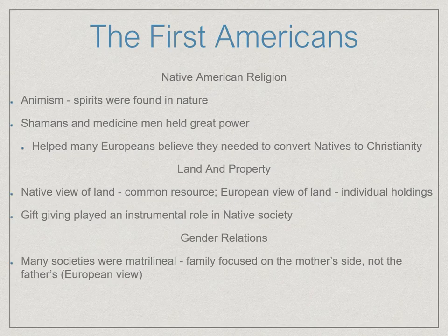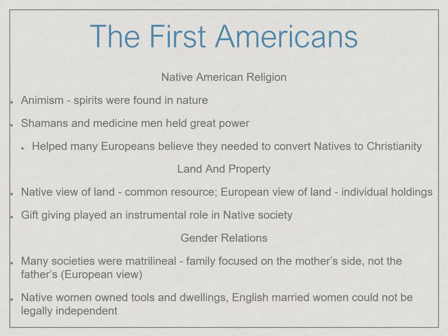We see that some Native groups were matrilineal, where family status and last name follow the mother, not the father — which did not exist at all in Europe. In Native societies, women could own things: their tools, their homes, whatever they needed. But in Europe, like England for example, if you were married, a woman was not an independent person. She was essentially the property of her husband.